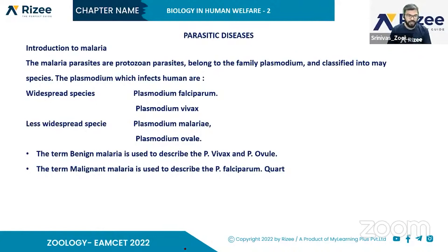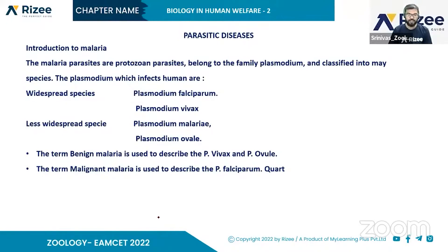The primary host of malaria is the female Anopheles mosquito. The secondary host is man. The reservoir host is the monkey. Plasmodium is the causative parasite.